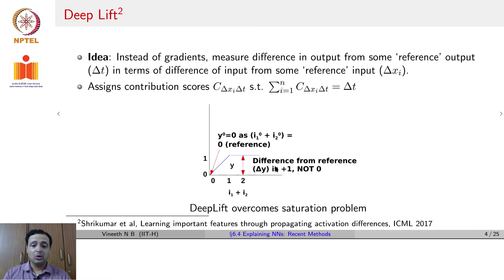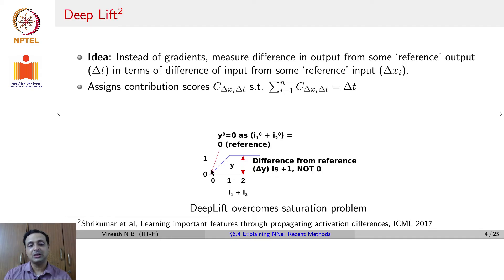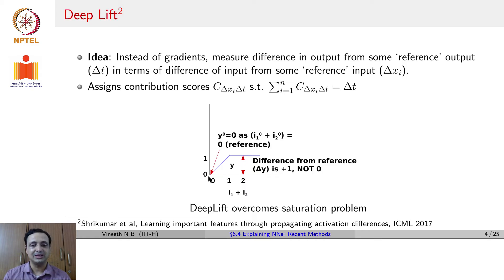With this approach, the saturation problem goes away. Because we are no longer considering differences between successive points on the x-axis, but always looking at the difference with respect to the reference (which could be 0). Whether i1 + i2 = 1.1 or 1.2, it will still have a difference with respect to reference 0, giving a valid, non-zero gradient. That is how DeepLift counters the saturation problem.